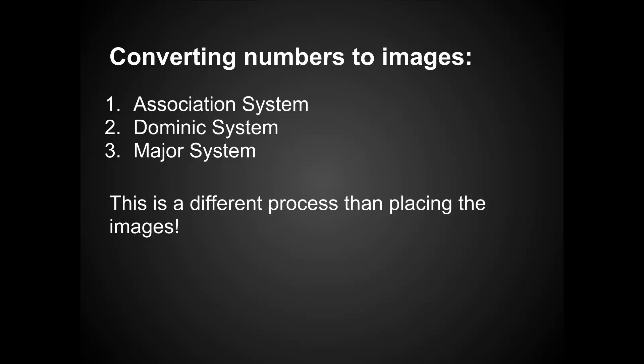So I've covered the association system, the Dominic system, and the major system. The reason I made this screencast is to clear up some confusion, because people were confusing the major system with the PAO system, or the Dominic system with the PAO system, but they're two separate things. What I'm explaining here is the process of converting numbers into images, which is different from the process of placing those images in your memory palace. I'll get to that in a minute.